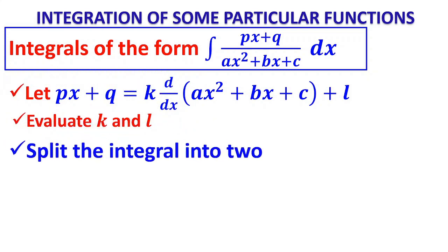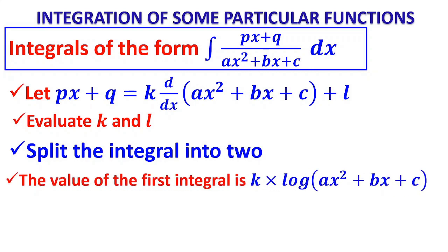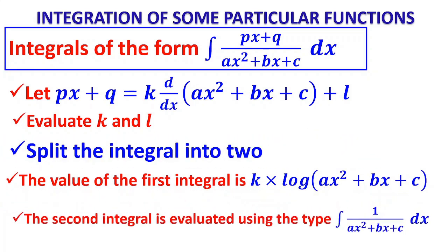Then you split the integral into two terms — first term over the denominator plus second term over the denominator. The first integral will have the numerator containing the differentiation of the denominator, so it equals log of the denominator. The second integral is evaluated using the type already seen: 1 upon a quadratic factor. To recollect: numerator is linear, denominator is quadratic.